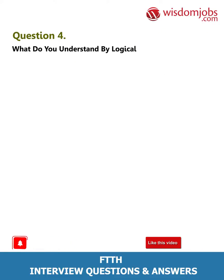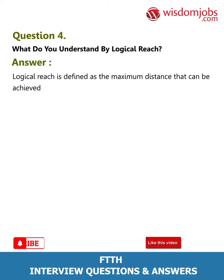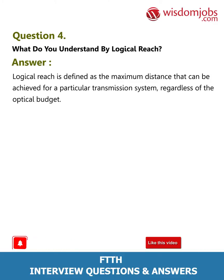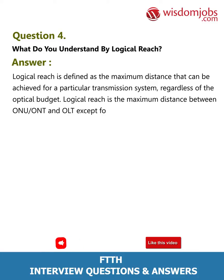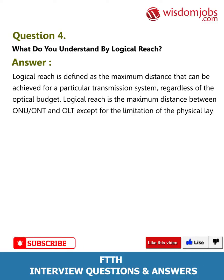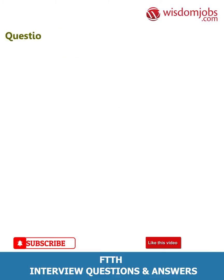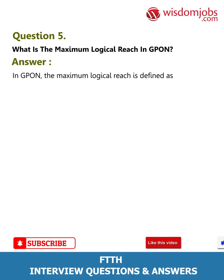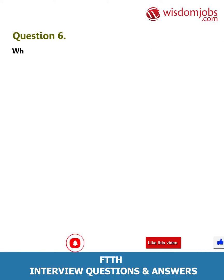Question 4: What do you understand by logical reach? Answer: Logical reach is defined as the maximum distance that can be achieved for a particular transmission system, regardless of the optical budget. Logical reach is the maximum distance between ONU/ONT and OLT, except for the limitation of the physical layer. Question 5: What is the maximum logical reach in GPON? Answer: In GPON, the maximum logical reach is defined as 60 km.